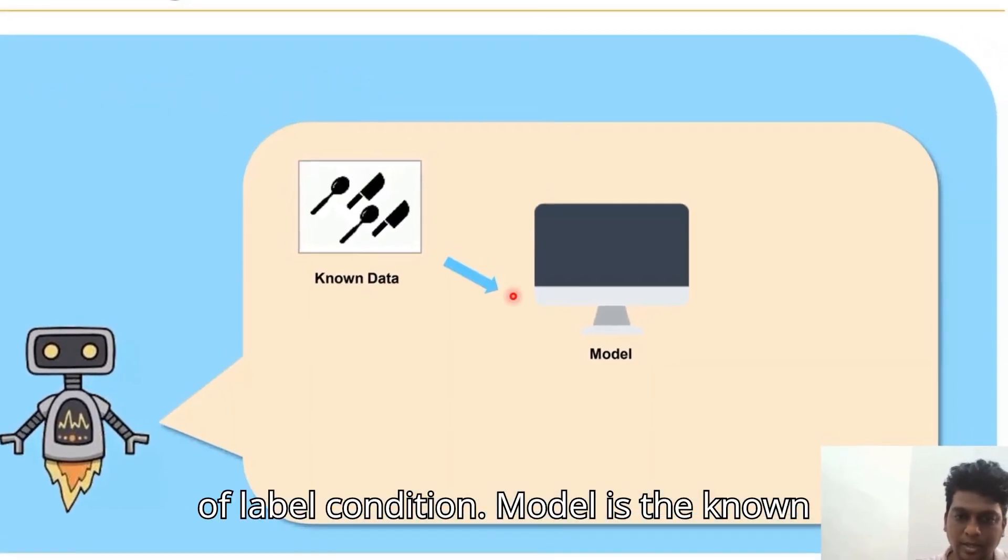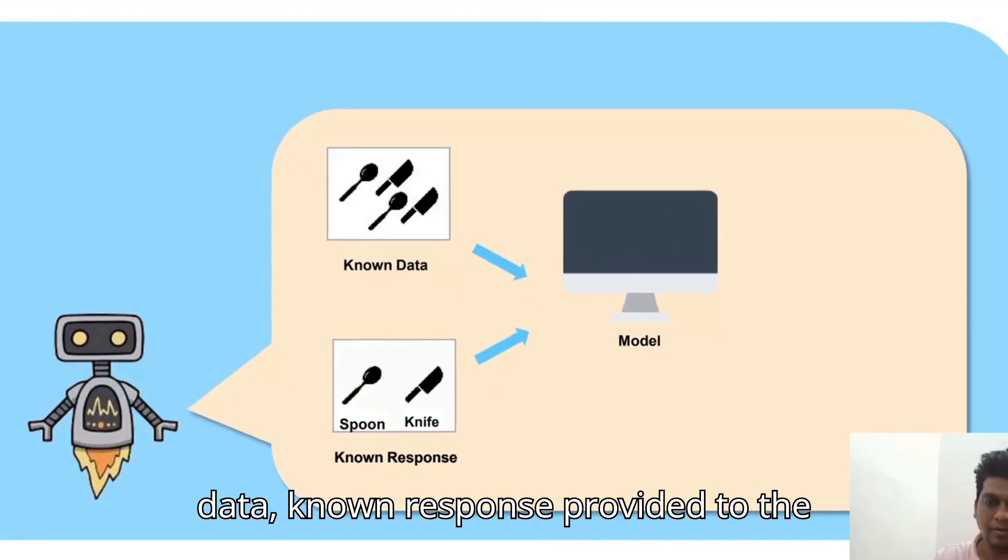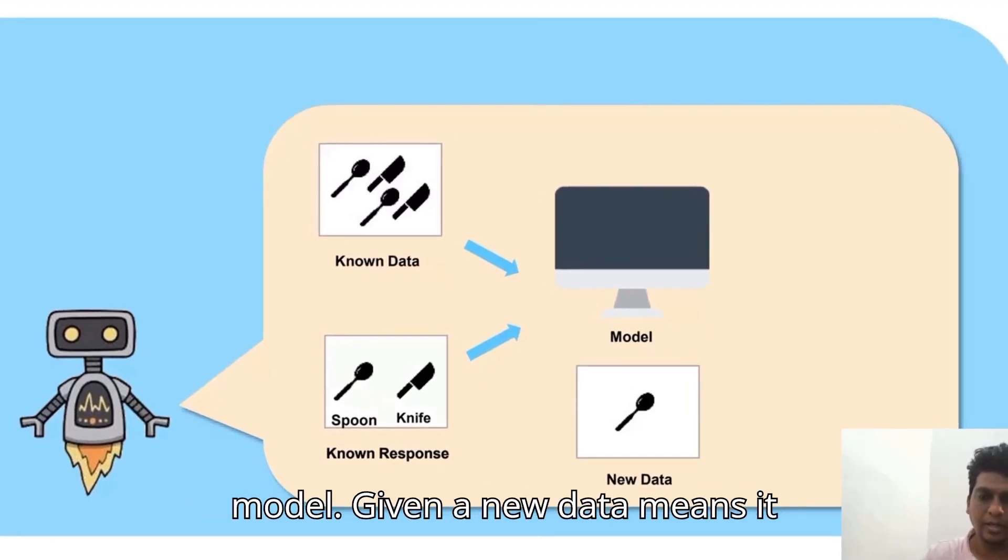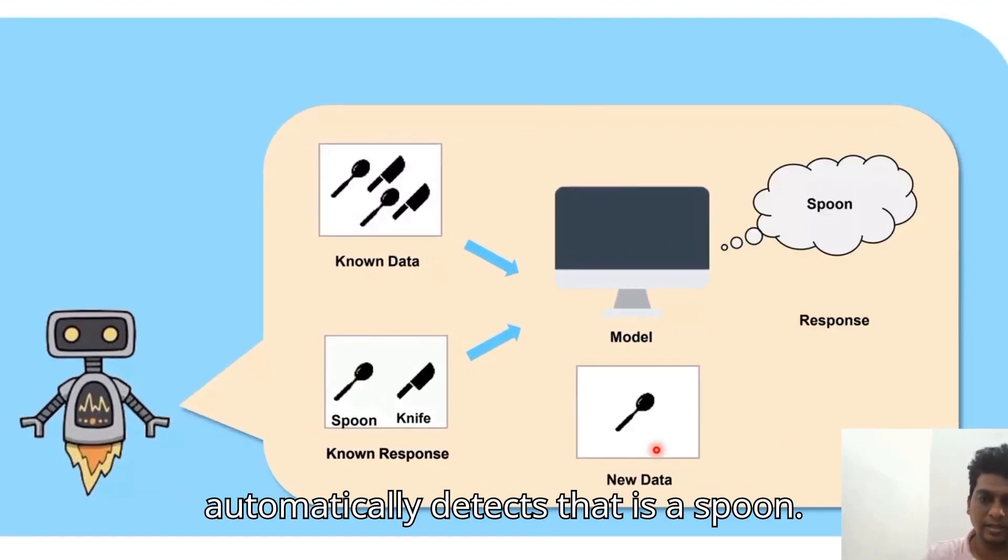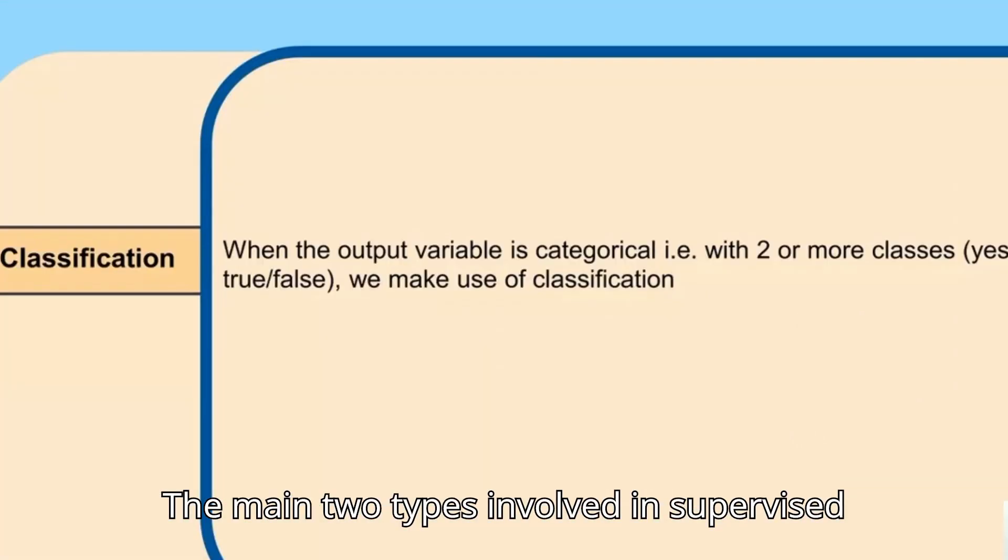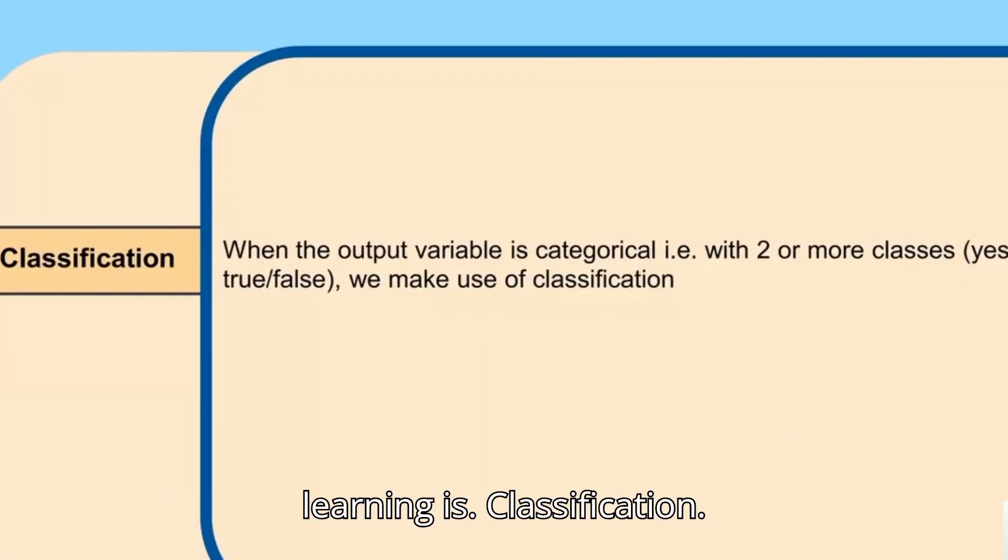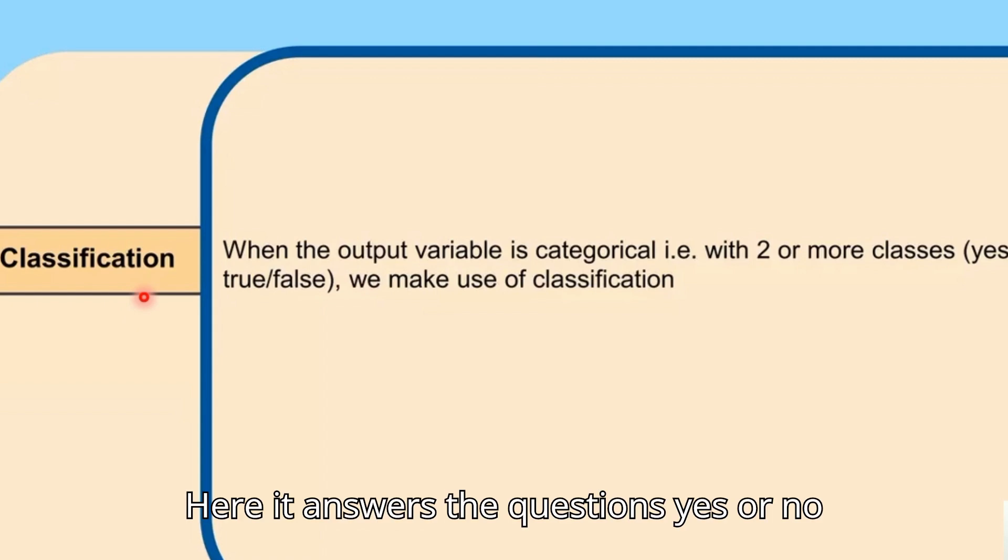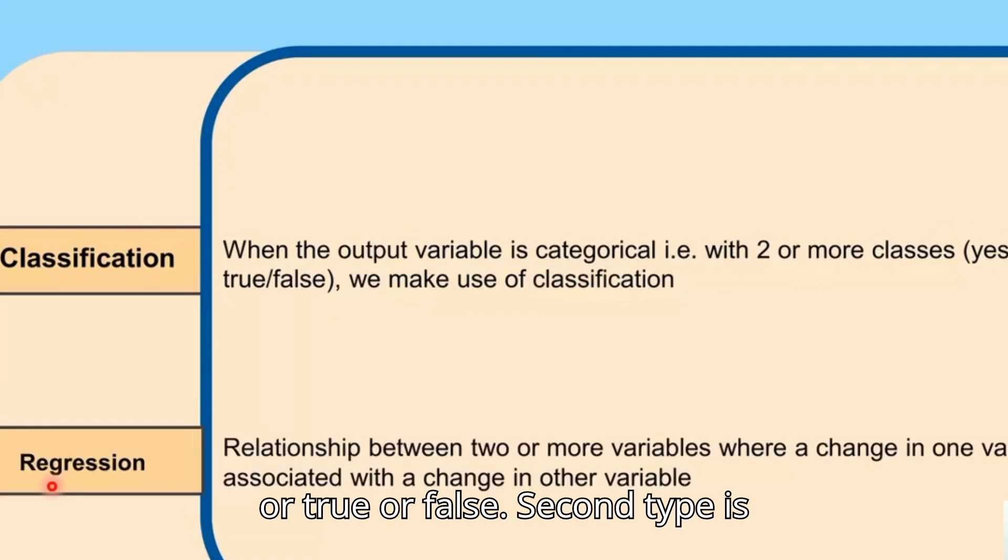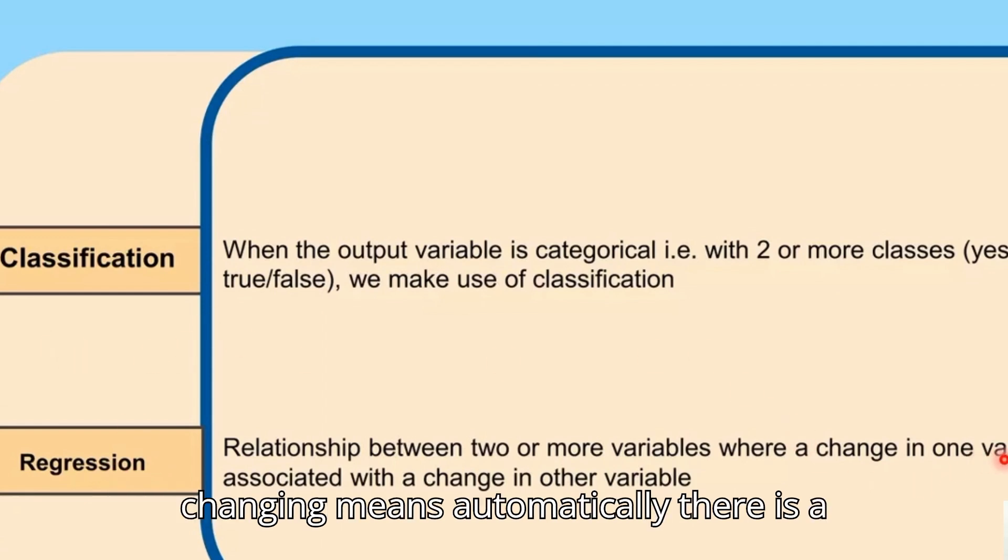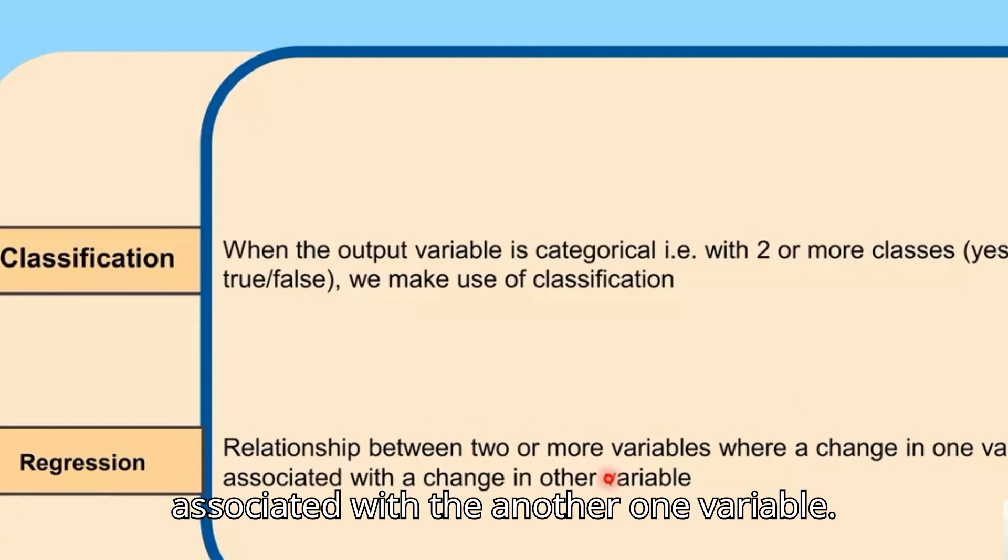The model uses known data and known responses. Given new data, it automatically detects correctly. The main two types involved in supervised learning are classification and regression. Classification answers questions like yes or no, true or false. Regression shows if one variable is changing, it can be associated with another variable.